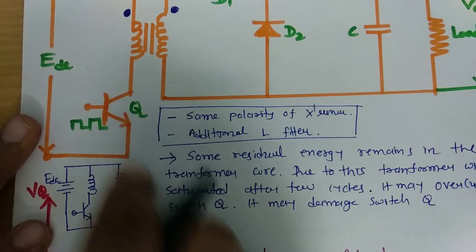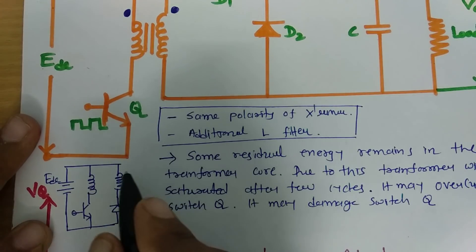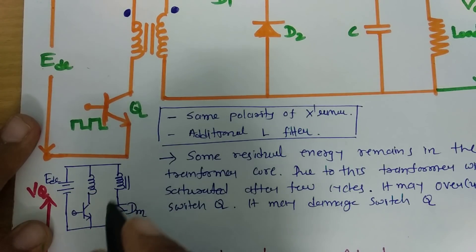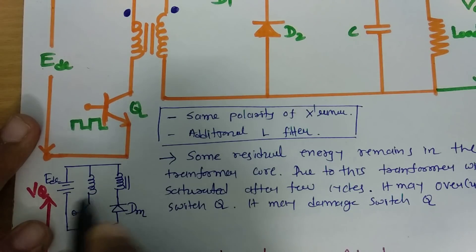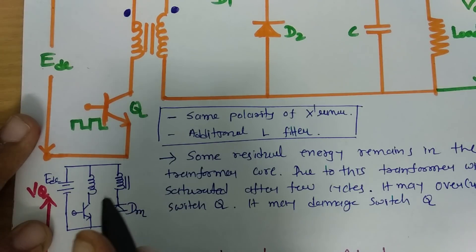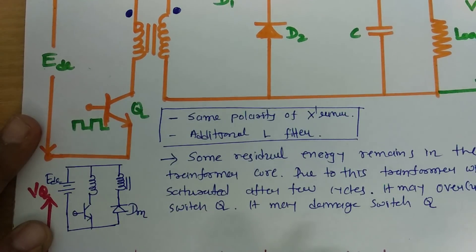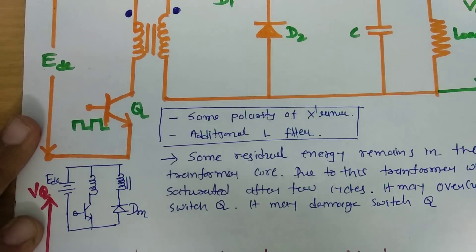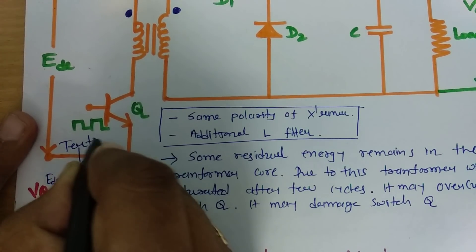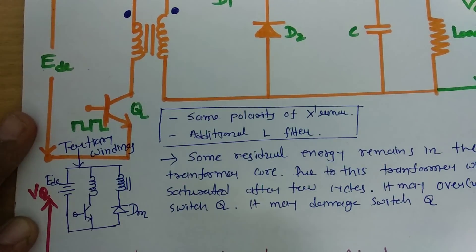Basically this is what happens when the transformer core is getting saturated. For that we connect this tertiary circuit, which solves this issue. Sometimes you might observe this circuit given in reference books, and that is because of the residual energy. We need to demagnetize it at the primary side, and for that we connect this demagnetization diode. It will not damage the switch, and demagnetization of the transformer core happens, so residual energy is not stored inside the transformer.